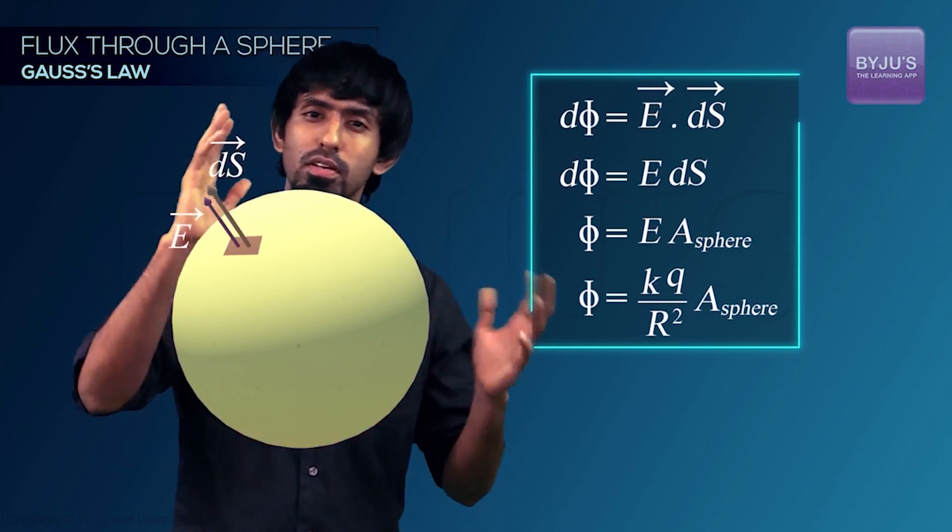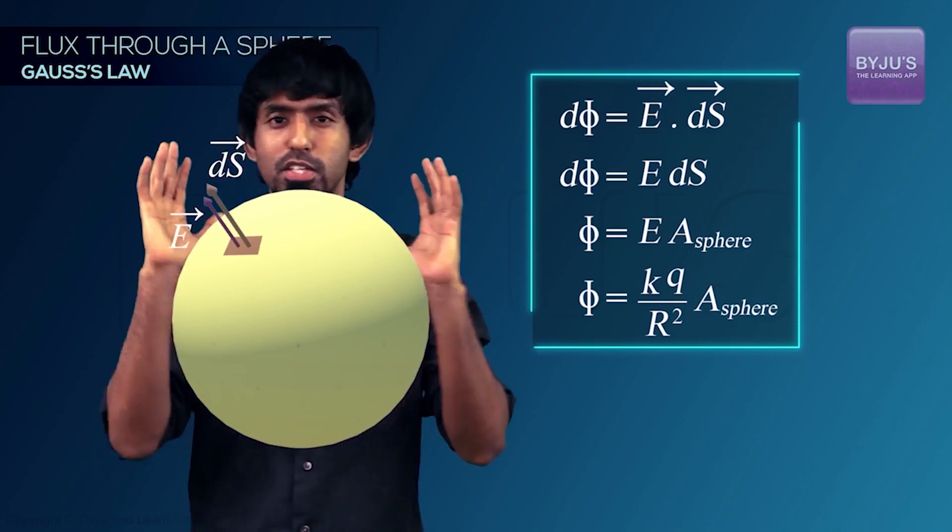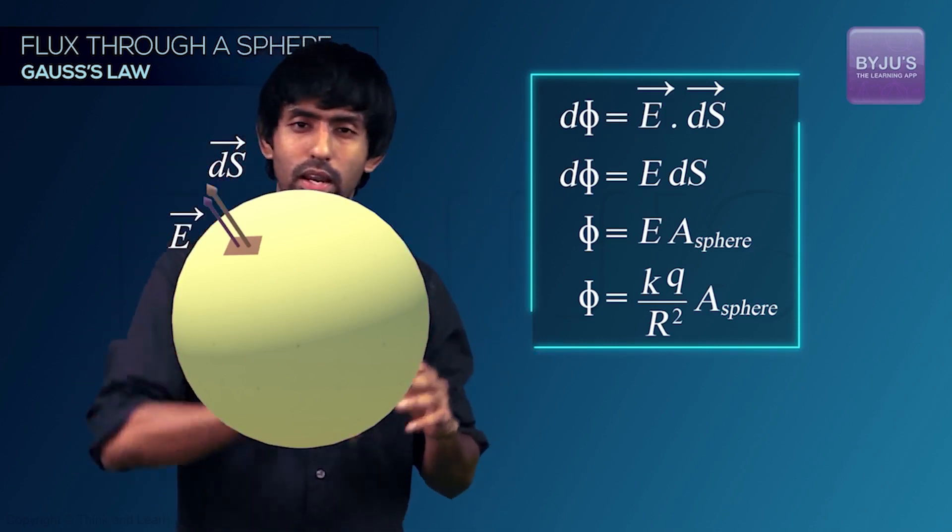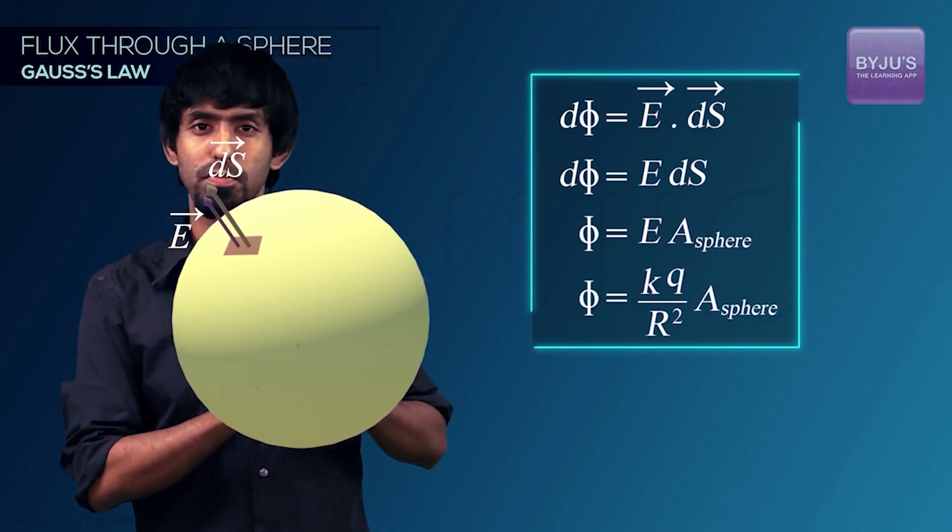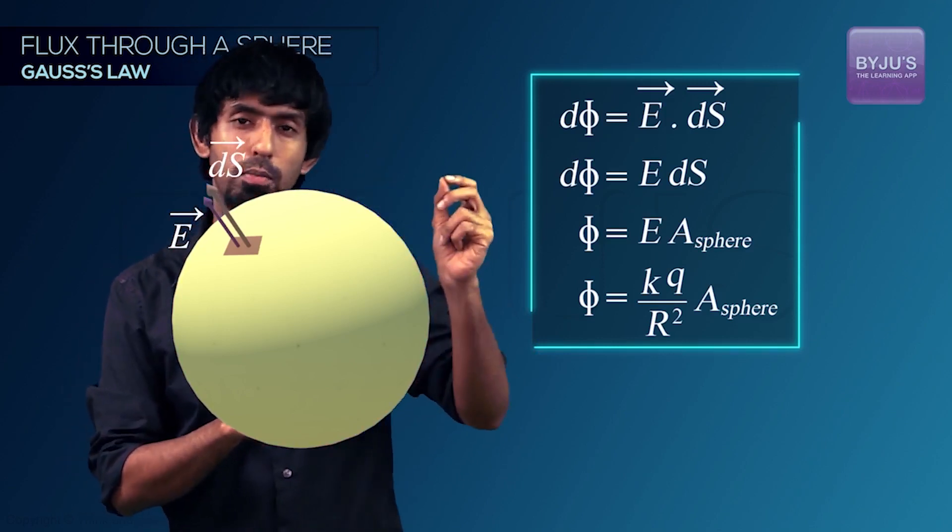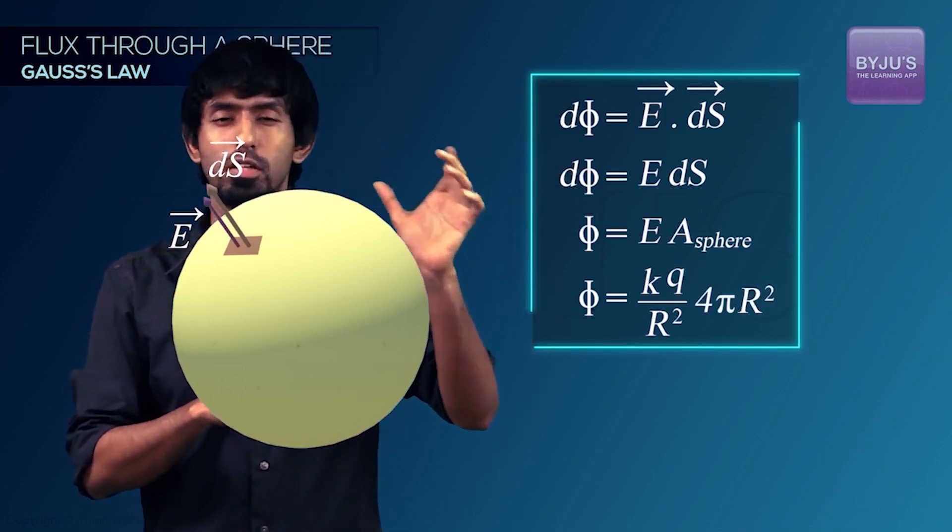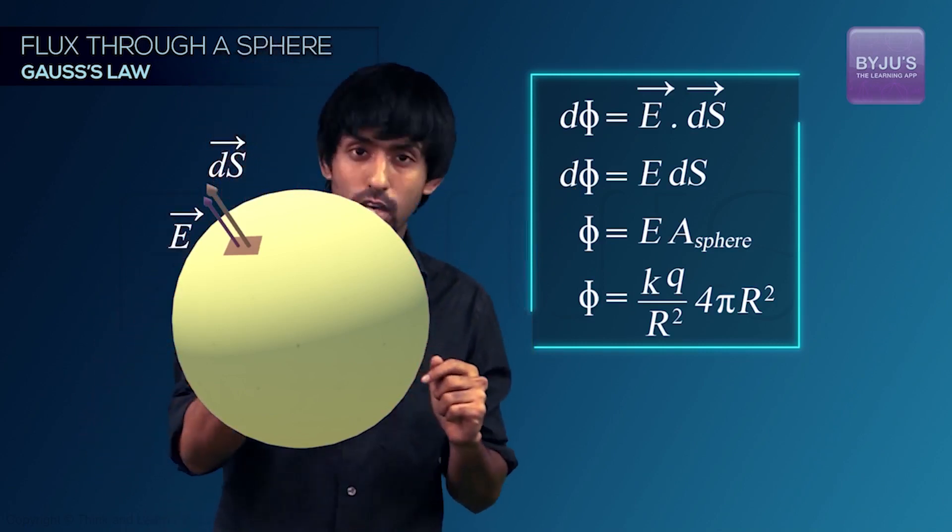So what is the area? 4πR² is the surface area of the sphere. We can integrate and get the answer. So you're going to have KQ by R² multiplied by 4πR² as your flux, the net flux to the surface with a charge Q at the center.